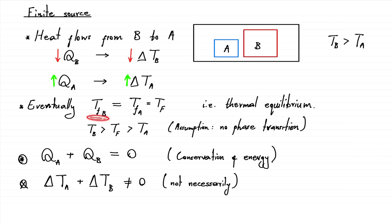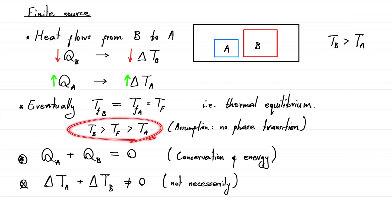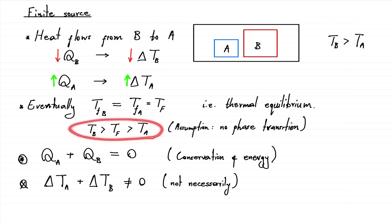The final temperature of object B will be the same as the final temperature of object A — let's call this T sub F. The final temperature T_F is typically smaller than that of the initially hot object but larger than that of the initially cooler object. So T_F will be smaller than the initial temperature of object B but larger than the initial temperature of object A. This inequality holds provided there is no phase transition involved.